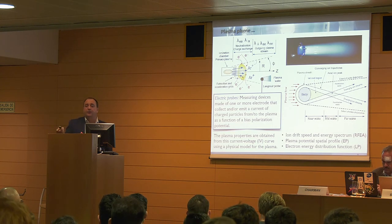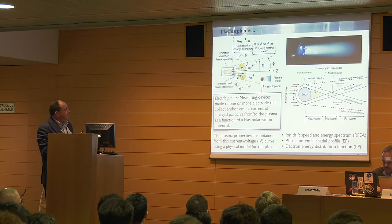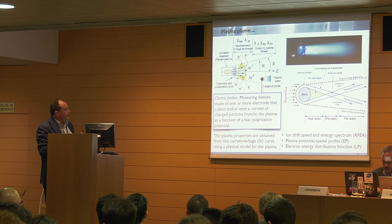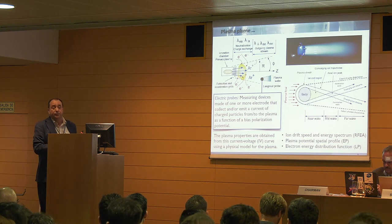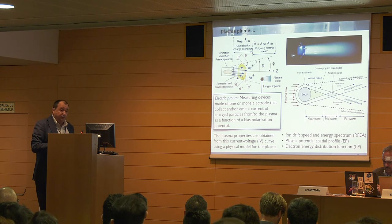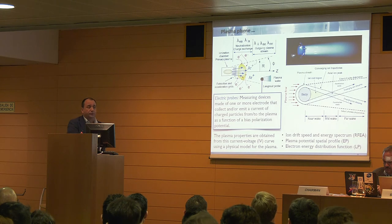What is an electric probe? Electric probes are easy to implement but unfortunately very hard to interpret. They can be defined as a material device made of one or more electrodes that collect or emit current from charged particles in the plasma as a function of the bias polarization voltage. What we get is a current-voltage curve for different polarization voltages of the electrode, from which we obtain the plasma properties. The physics behind relating the plasma model with this current is quite complex.